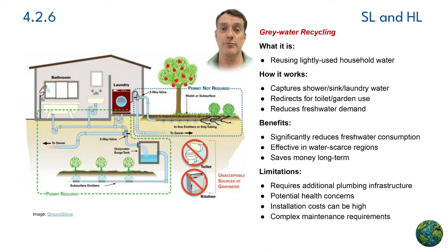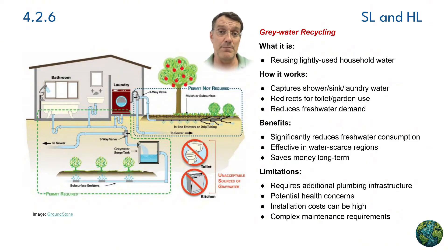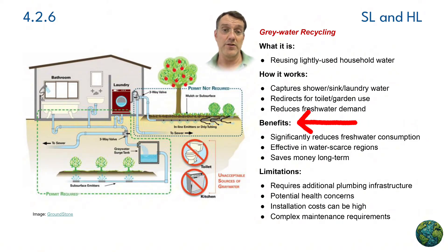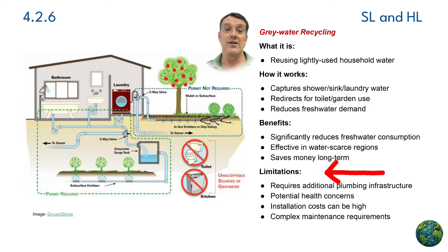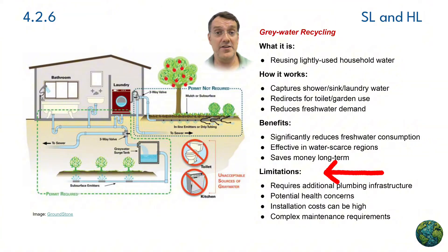Greywater recycling involves capturing and reusing lightly used household water from showers, sinks, and laundry for toilet flushing and garden irrigation. Greywater systems can reduce household water consumption by between 30 and 50 percent by capturing water that would otherwise go to waste, redirecting it to appropriate secondary uses, and reducing overall freshwater demand. Benefits include significant freshwater consumption reduction, effectiveness in water-scarce regions, and long-term cost savings. Limitations include the requirement for additional plumbing infrastructure, potential health concerns if not managed properly, high installation costs depending on location, and ongoing maintenance issues.